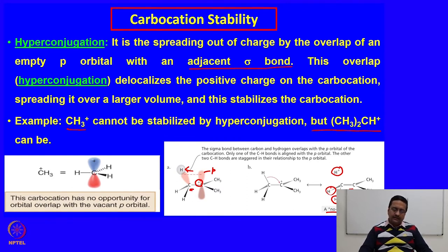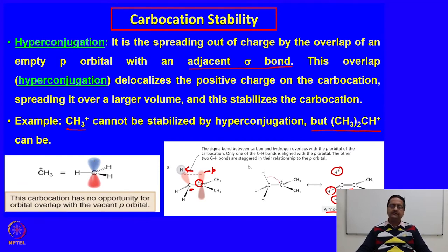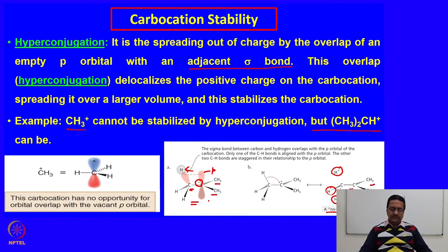If a carbocation has three methyl groups associated with it, then three times three — nine such hydrogens — will be available for hyperconjugation. Therefore you will have nine hyperconjugating structures, giving greater stability to the tertiary carbocation. Each of the three methyl groups can participate, yielding nine hyperconjugating structures.